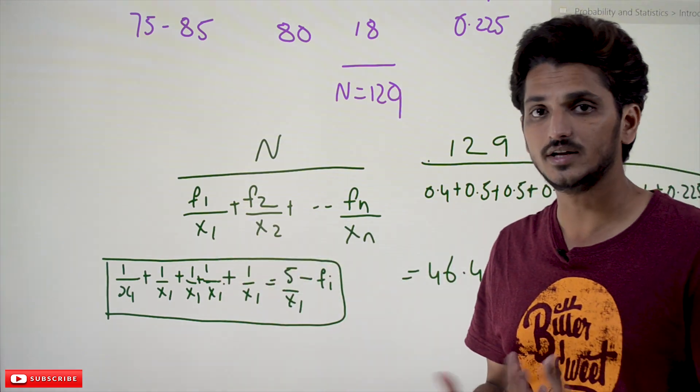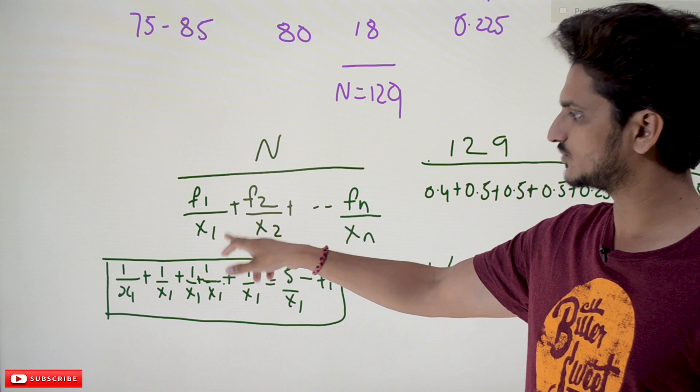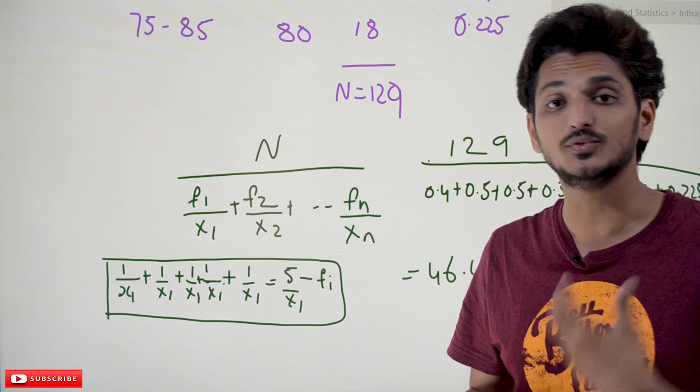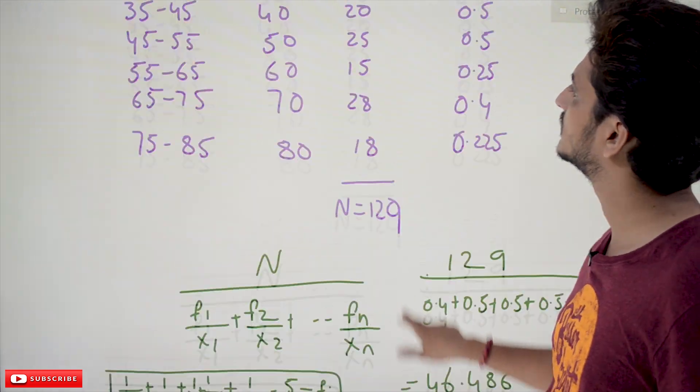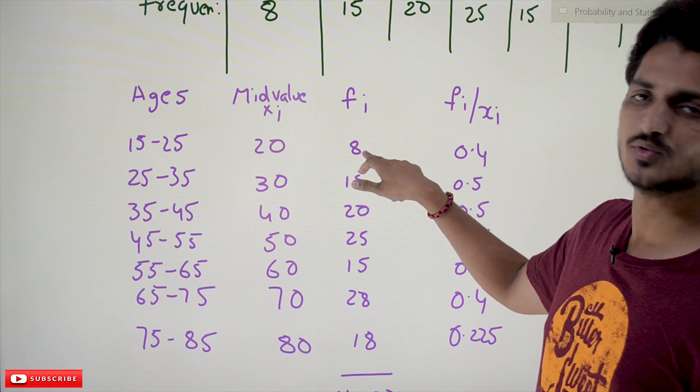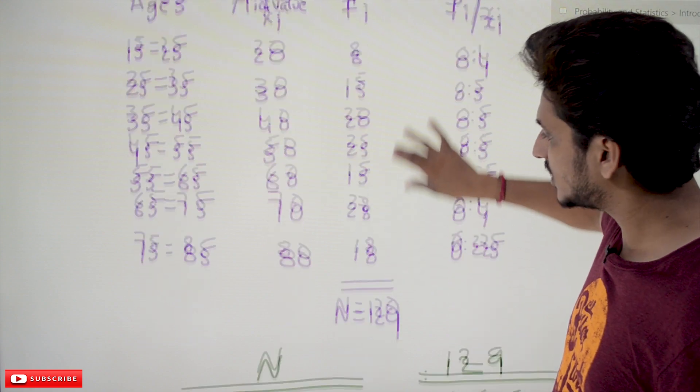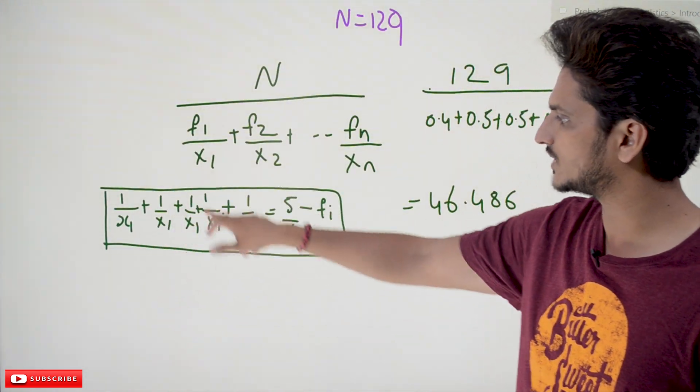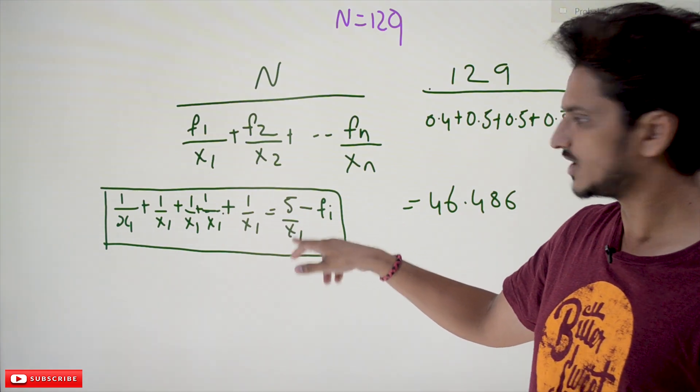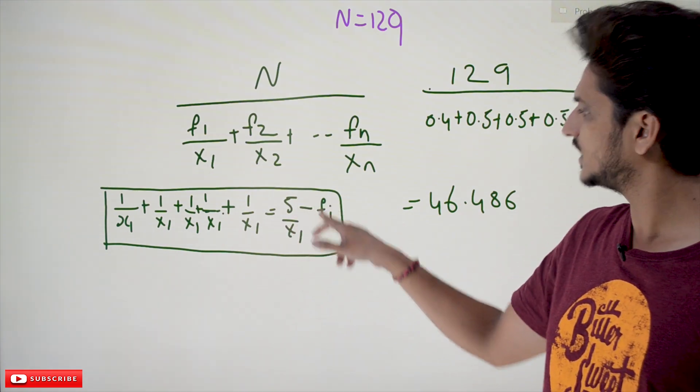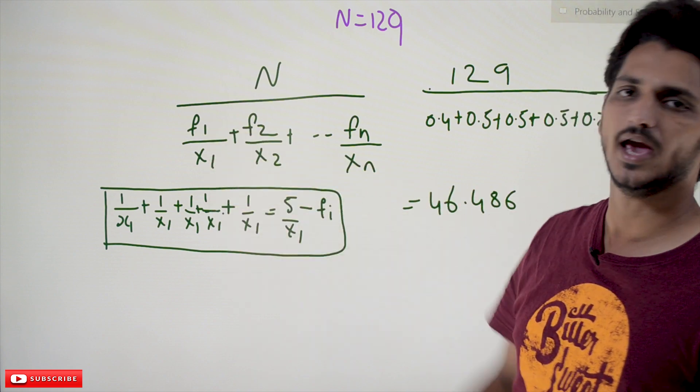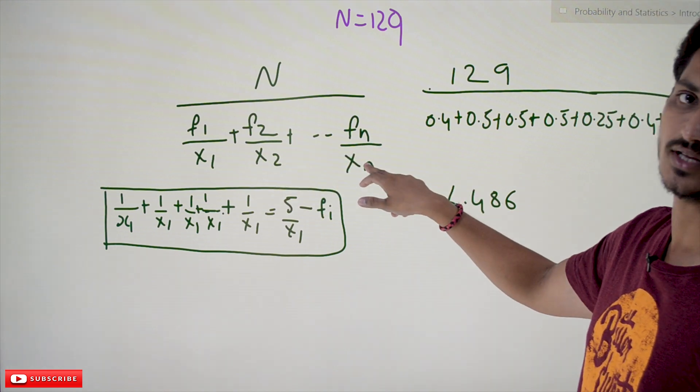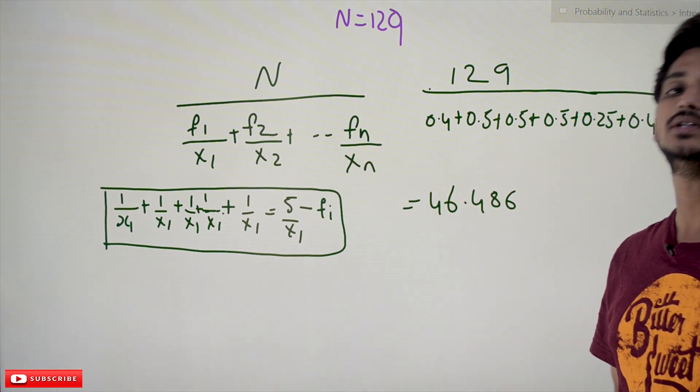Usually what we write is 1 by X1 plus 1 by X2 plus so on. But X1, how many times are we having? 8 times. If X1 appears 5 times, instead of writing 1 by X1 plus 1 by X1 plus 1 by X1, we write 5 by X1. That's what the frequency says. That's why F1 by X1 plus F2 by X2 plus so on. This is the equation if frequency distribution is provided for harmonic mean.